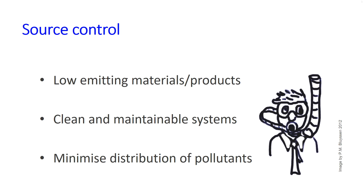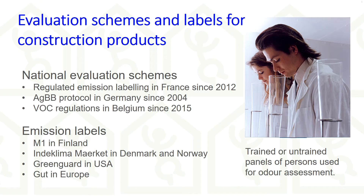Source control means to prevent or minimize emissions from any possible source, thus using low-emitting products and materials, clean and maintainable heating, ventilation and air conditioning systems, and minimizing certain pollutants from entering or being distributed in a space. To minimize emissions of products and materials within the framework of the European Construction Product Directive, a number of member states have introduced national or voluntary evaluation schemes with an emission label. These schemes and labels can help you to select products with low volatile organic compound emissions and low odor.